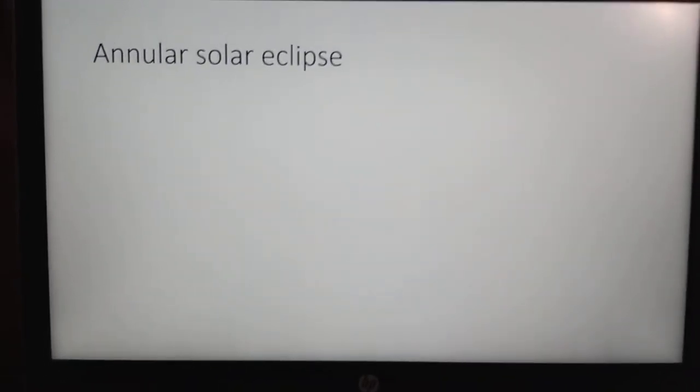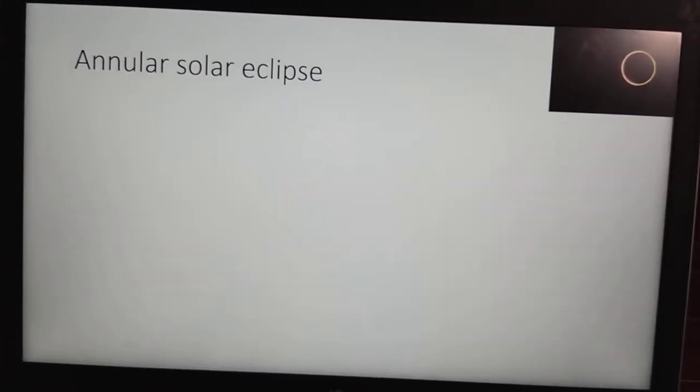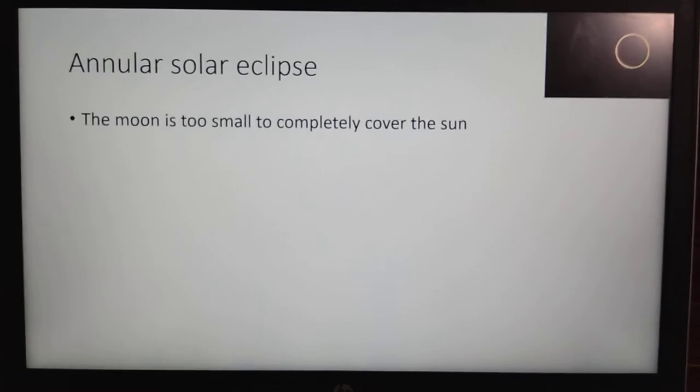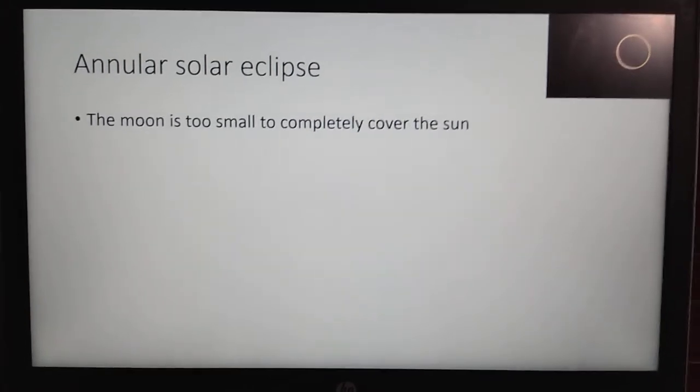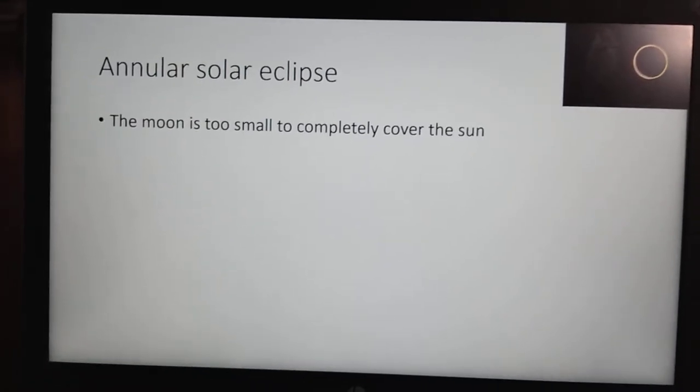The next kind of eclipse is an annular eclipse. There's one in the corner of your screen. It's when the moon is too small to completely cover the sun.